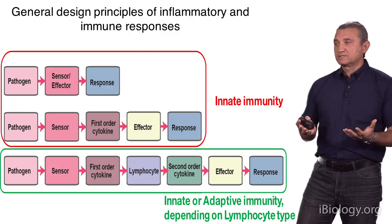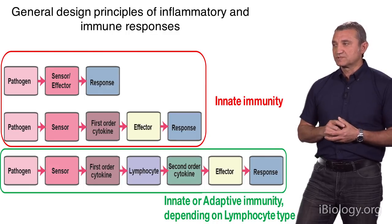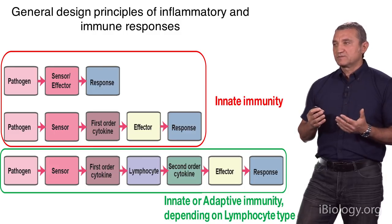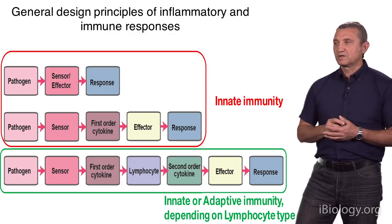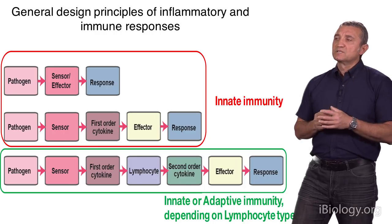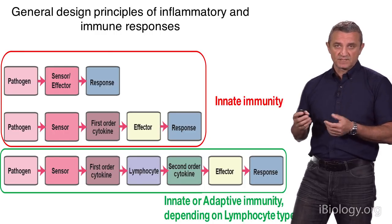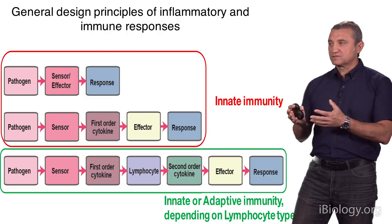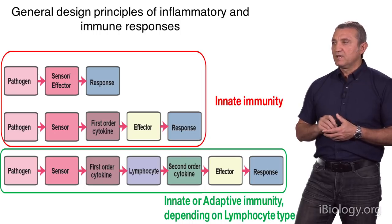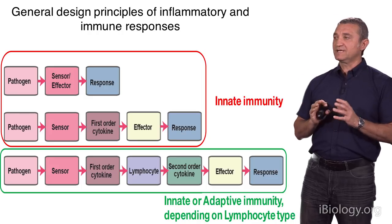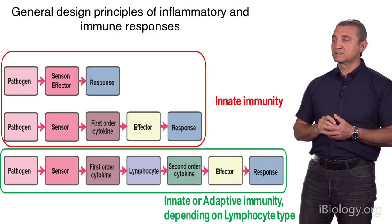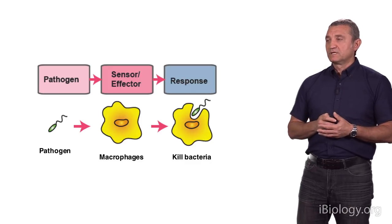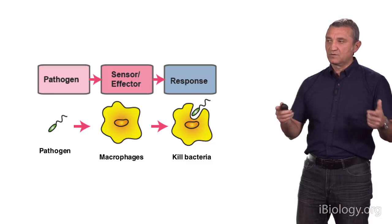From that perspective, we can summarize the entire operation of the immune system as connections between pathogen sensors and effectors, of which there are three types. The simplest is when the sensor and the effector are the same entity — the same cell, where the sensor would be a receptor and the effector an antimicrobial enzyme. The second type is when the sensor produces a signal that acts on the effector. The third type is when there is a lymphocyte in between. The first two types belong entirely to the innate immune system, and the third can be either innate or adaptive depending on the type of lymphocyte involved.